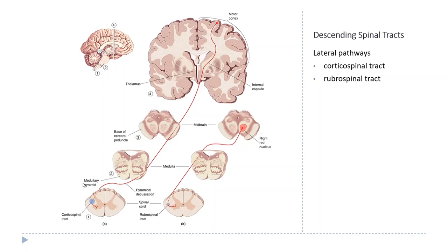The lateral pathways consist of two bundles of axons: the corticospinal tract and the rubrospinal tract. These tracts are named after where they initiate and where they end. The corticospinal tract starts in the motor cortex and ends in the spinal cord. The beginning of the corticospinal pathways is the motor cortex, where the cell bodies of the corticospinal tract initiate. The axons come down through the white matter of the cortex and through a bundle of white matter in the diencephalon called the internal capsule, just beside the thalamus, then down through the midbrain.